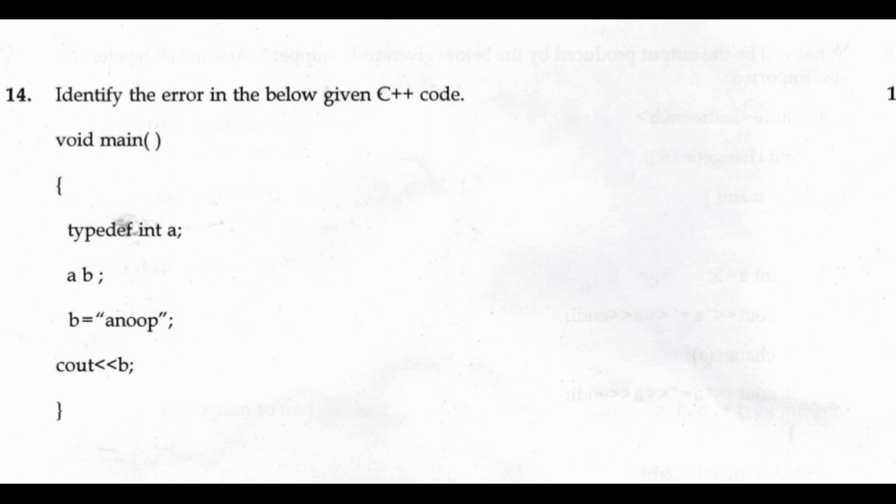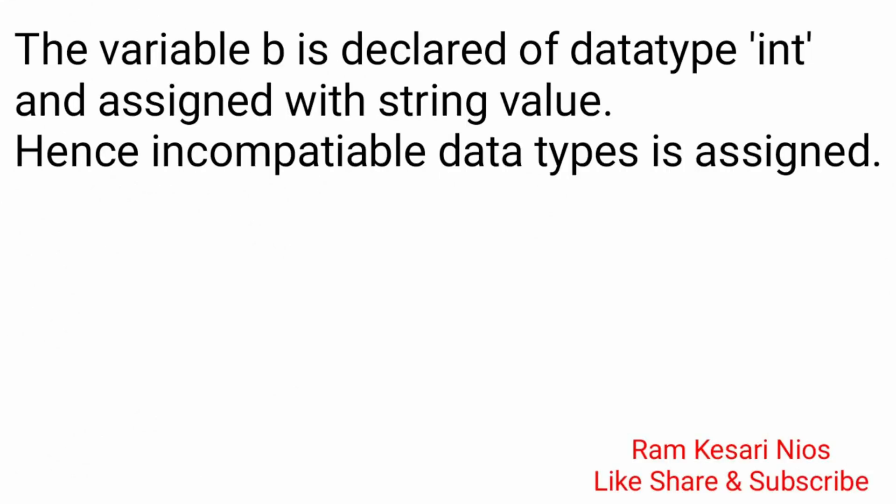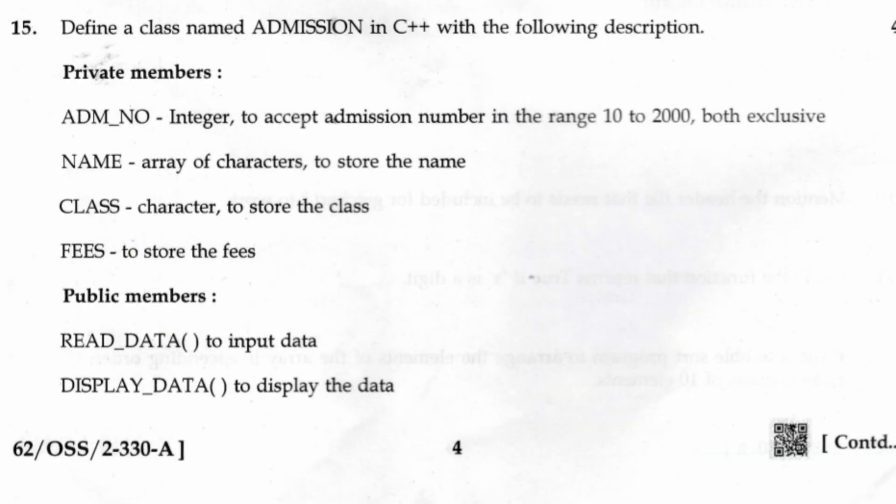Question 14: Identify the error in the below given C++ code. void main() { typedef int a; a b = "new"; cout << b; } The variable b is declared of data type int and assigned with a string value, hence incompatible data type is assigned.